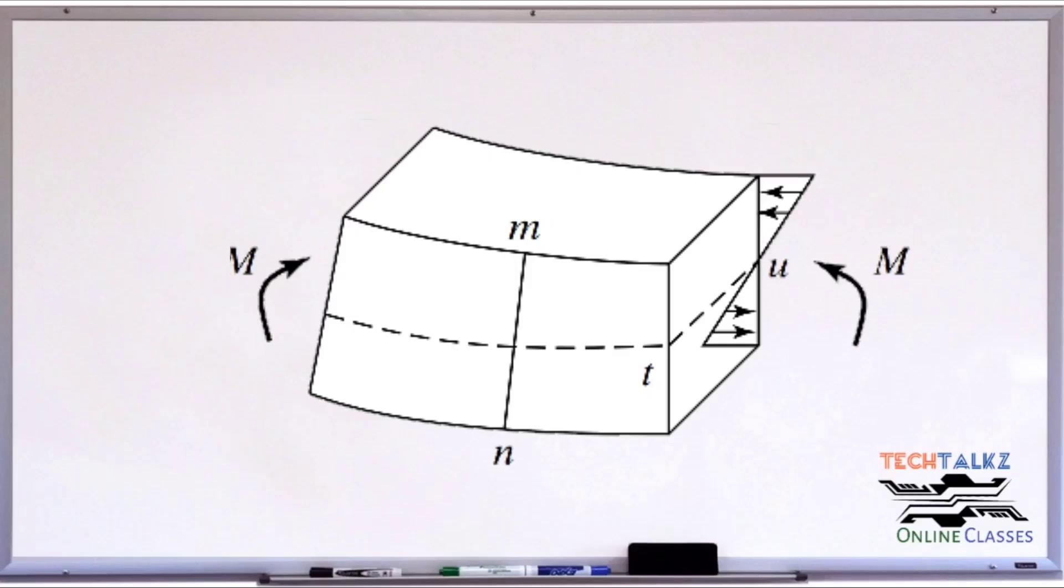If you analyze it, somewhere between the top and bottom of the beam, this is the middle plane. There is a surface in which longitudinal lines do not change in length. This surface is indicated by the dashed line here, that is ST. It is called the neutral surface of the beam.